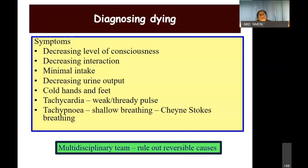Before going further, we need to know: are we diagnosing the process of dying correctly? Only then can we guide the family. General symptoms include decreased or changing level of consciousness, the patient stops interacting, intake becomes less, output becomes less, hands and feet become cold and clammy, tachycardia, weak or thready pulse, and shallow breathing. At this point, with the multidisciplinary team, first rule out any reversible causes — if none are found, the process of dying has begun.